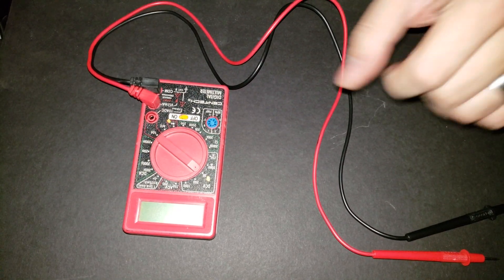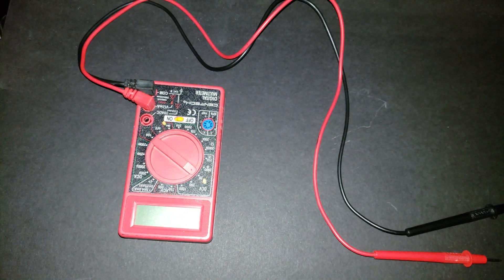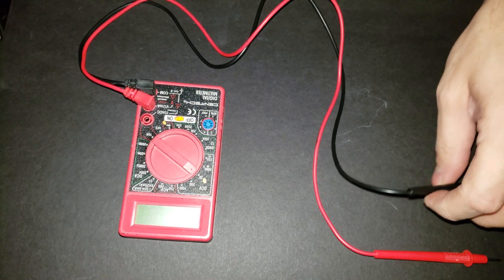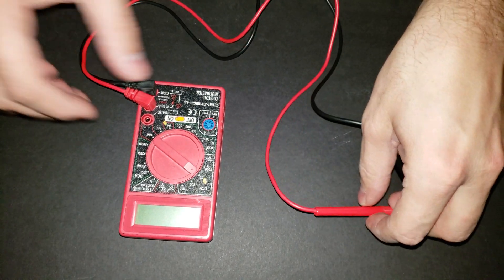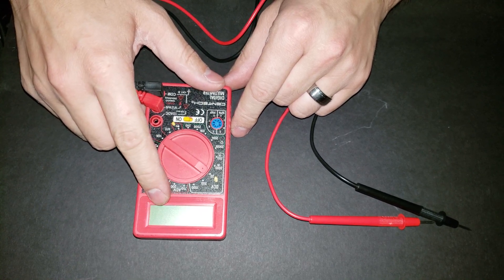All right, so I got this Centric digital multimeter from Harbor Freight. It usually comes free with a coupon. I haven't used it in a while, and when you turn it on, you can see there's nothing on the display here.